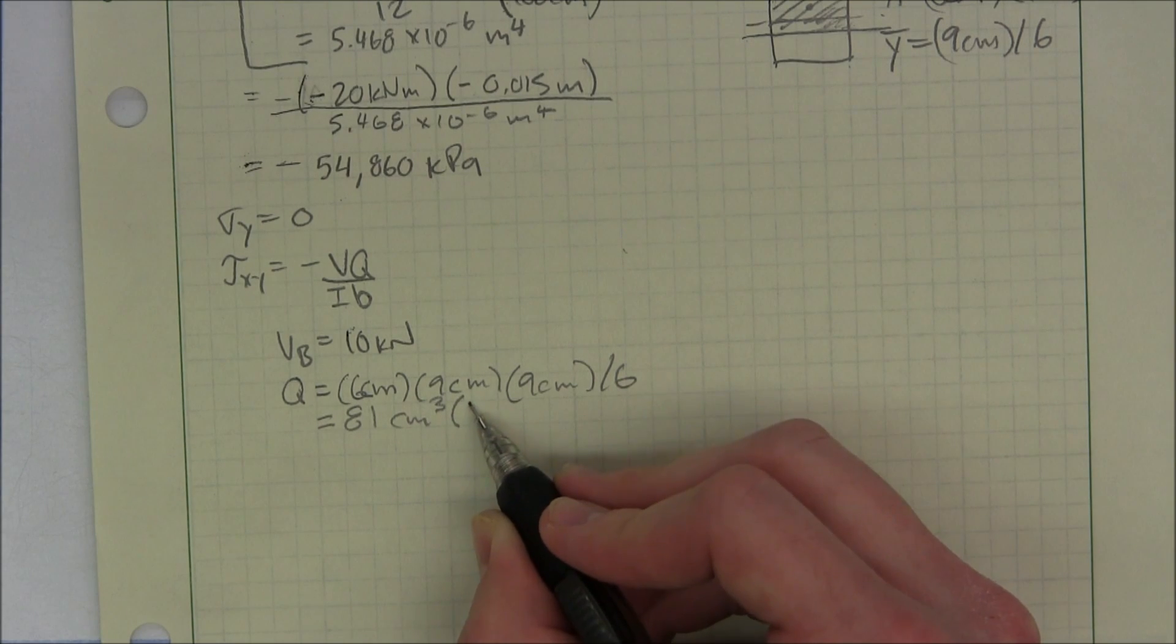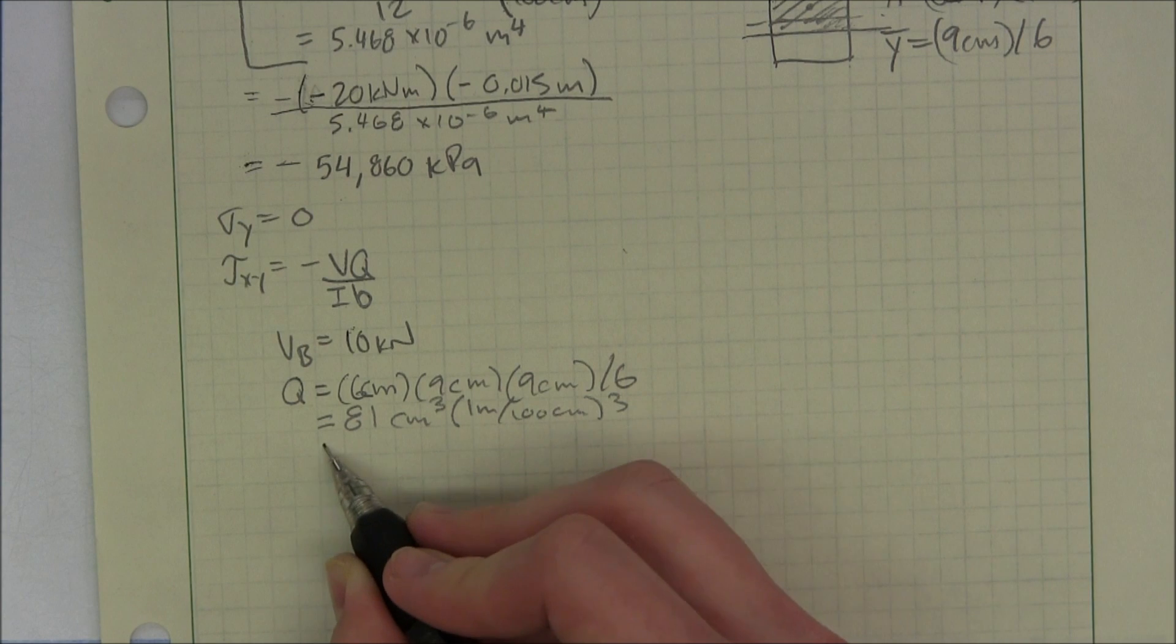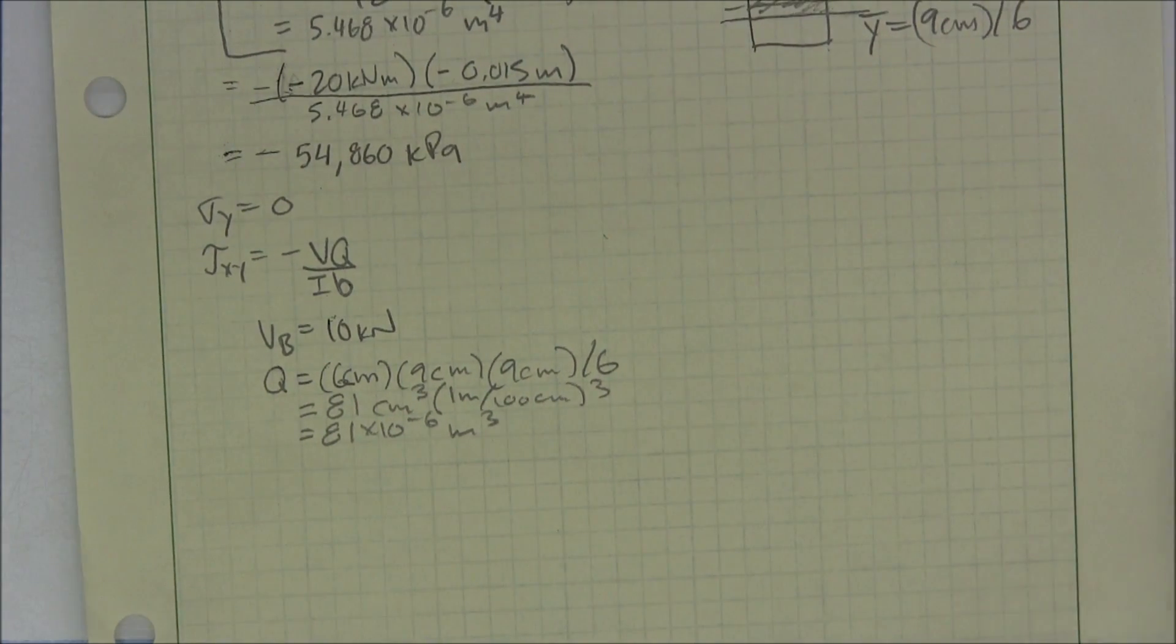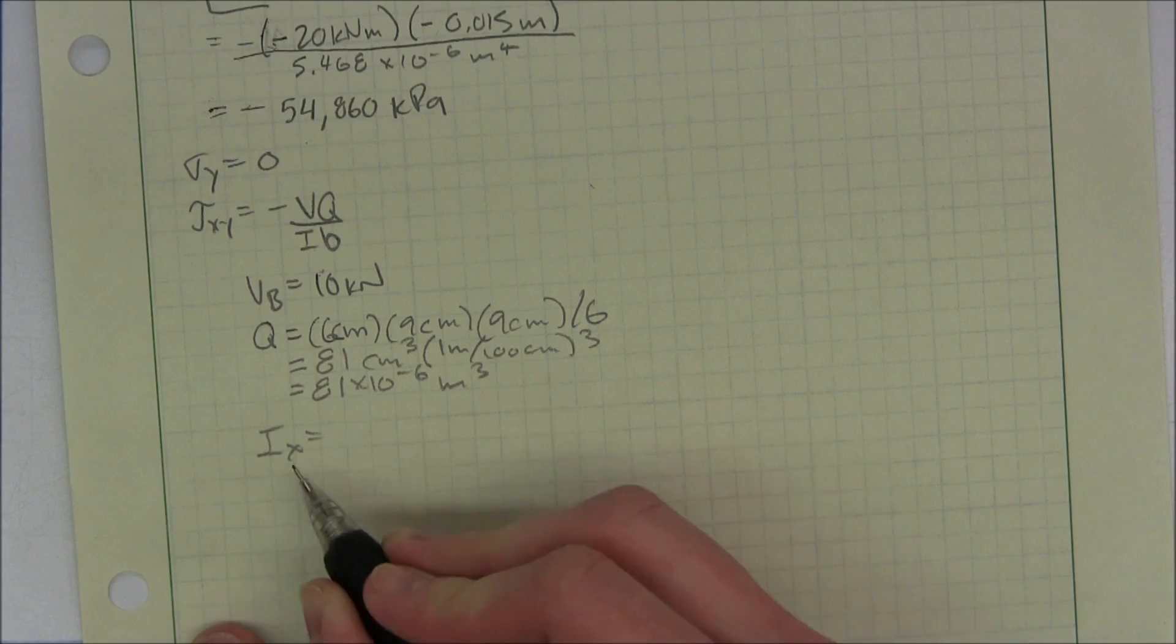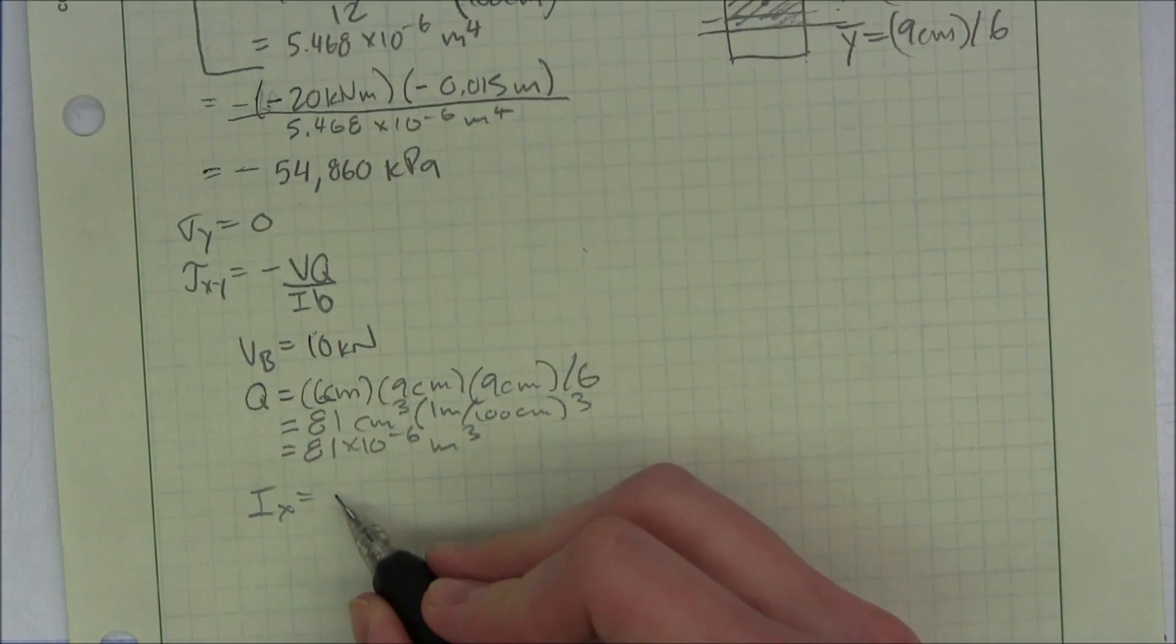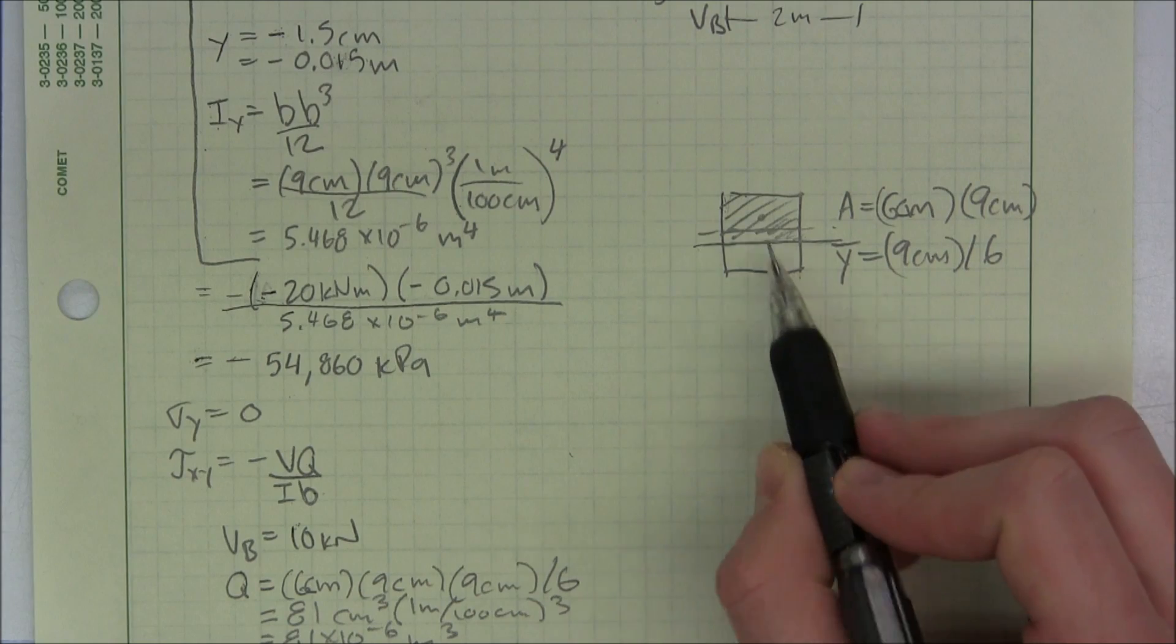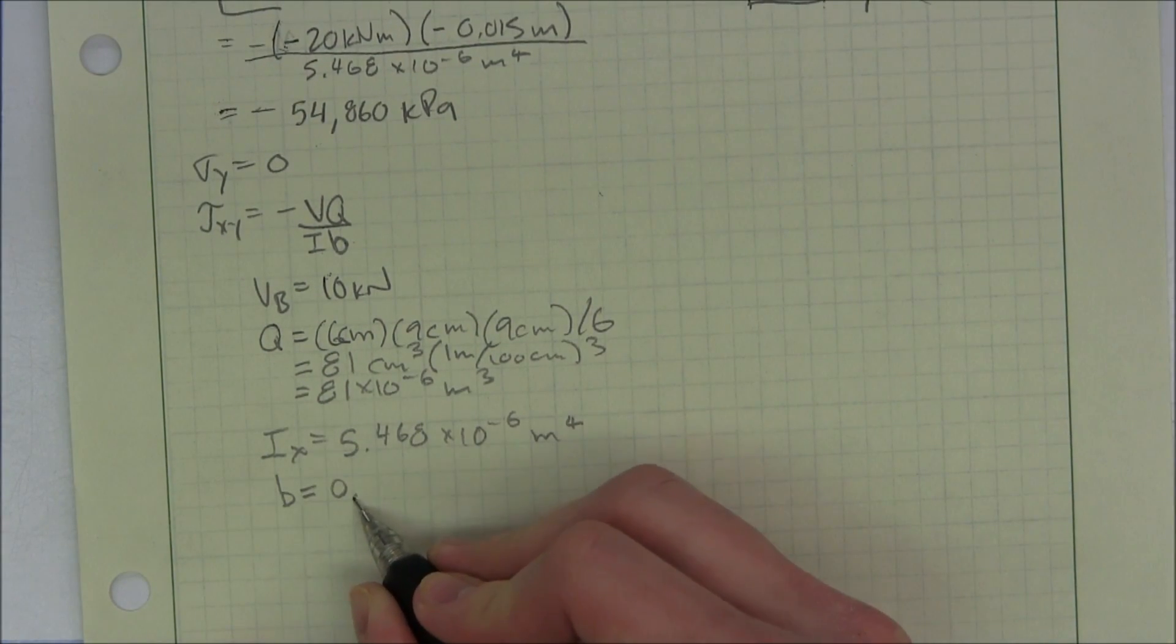Let's convert that. 1 meter, 100 centimeters cubed, equals 81 times 10 to the negative 6th meters cubed. So that's our Q, now let's calculate our I, and that's IX to be more specific. We already calculated that up here, so I'll just reuse that value. And our B is our width, which is going to be the same at any location, but that's going to be 9 centimeters. And I'll just write that in meters.